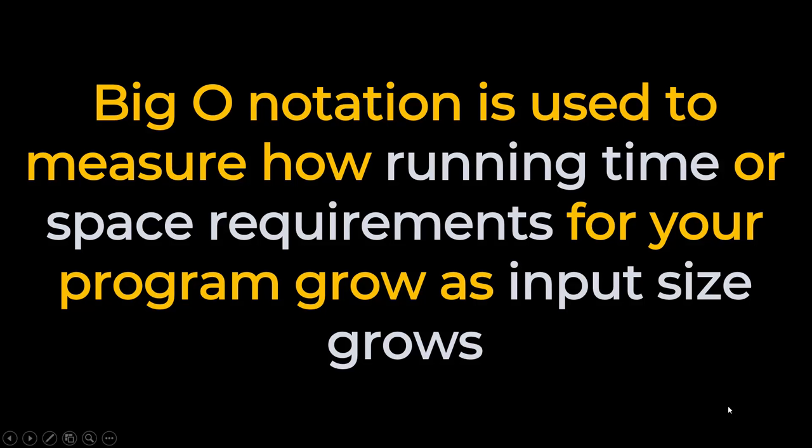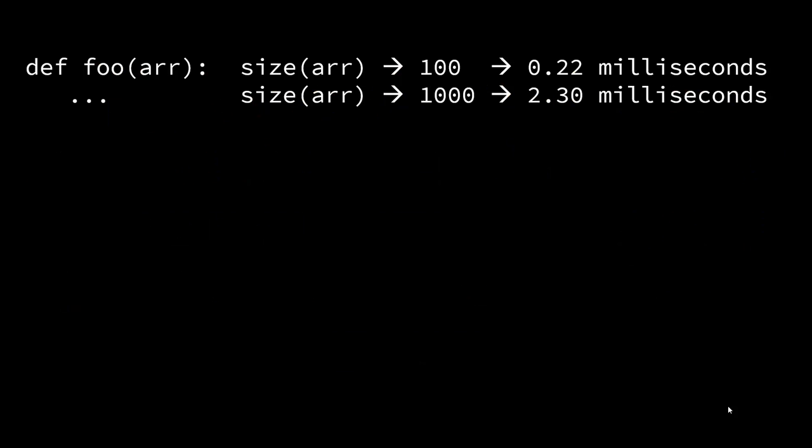Big O notation is used to measure how running time or space requirements for your program grows as the input size grows. In this video we're only talking about running time. Let's say you have this function foo which takes an array or a list as an input and it does some processing and returns some output. When the size of array is 100 it runs in 0.22 milliseconds, when it's 1000 it takes 2.3 milliseconds.